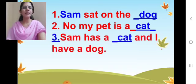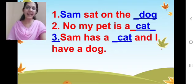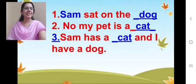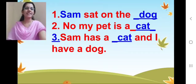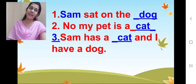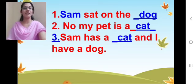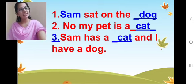What is the third one? 'Sam has a ___, and I have a dog.' What will it be? Cat — that is also cat. Correct. So 'Sam has a cat.' Write C-A-T. Done? Superb children, you are very smart. Shall we move on?